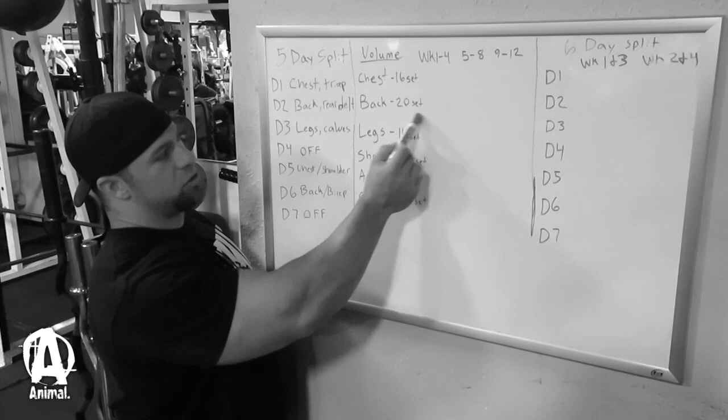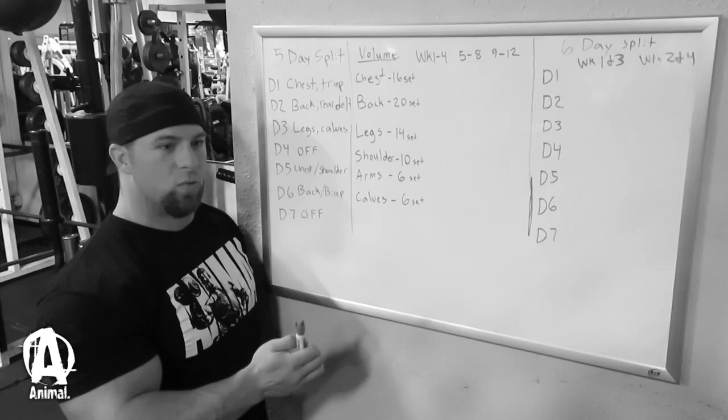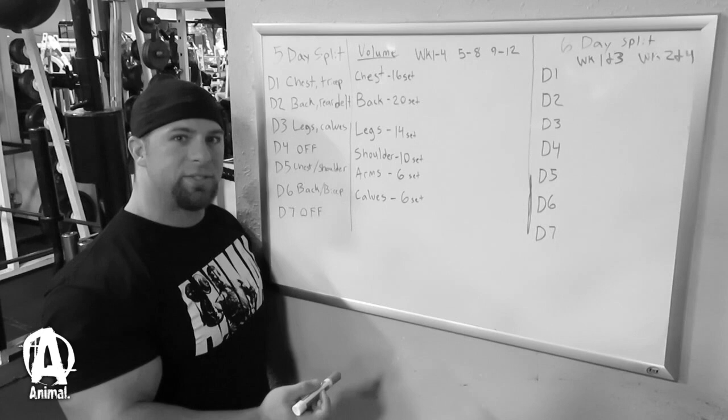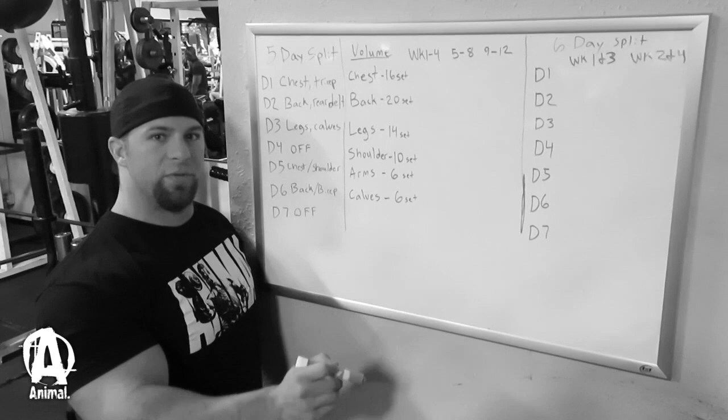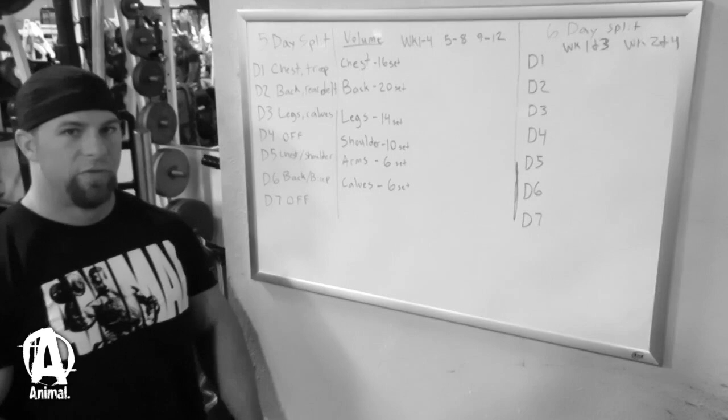So for me, my total volume was 16 sets for chest, 20 sets for back, 14 sets on legs. So legs, you could break that down further into what you're putting for quads, hamstrings, or glutes. I do that for my female clients as we can spread it out. It's just for how many sets you're doing for glutes and hams that we can get more specific, more implementing volume. And then arms and calves, six sets.